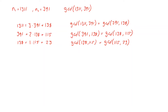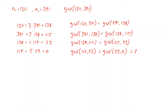We continue and divide 115 by 23: 115 equals 5 times 23 with remainder 0. So the GCD of 115 and 23 is the same as the GCD of 23 and 0, which equals 23. Our last non-zero remainder is 23, which is the greatest common divisor. So the GCD of 1311 and 391, derived using Euclid's algorithm, is 23.